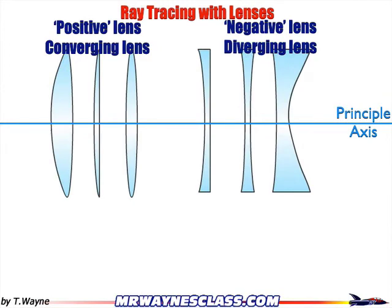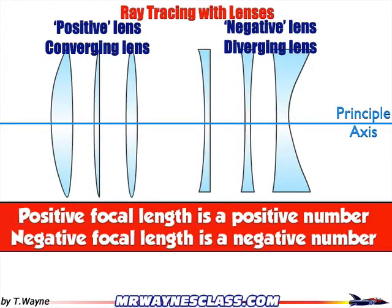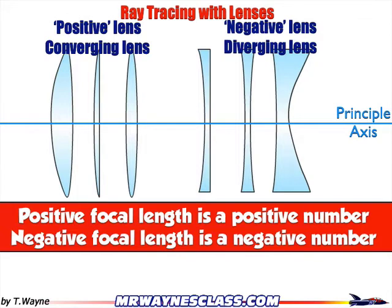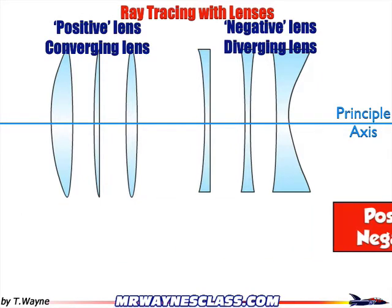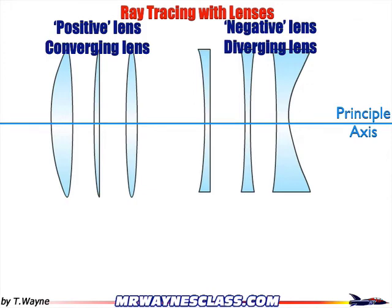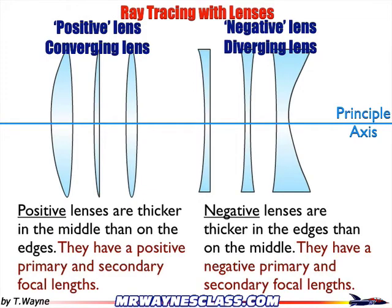First, let's talk about the two types of lenses. A positive lens is a converging lens; a negative lens is a diverging lens. They're called positive and negative because when we start doing the math, we'll put a positive number in for a converging lens for the focal length, and for a diverging lens, we'll put a negative number in for the focal length. The positive lenses are always going to be thicker in the middle and thinner on the edges. The negative lenses are thinner in the middle and fatter on the edges. So converging or positive are thick in the middle; diverging or negative are thinner in the middle.